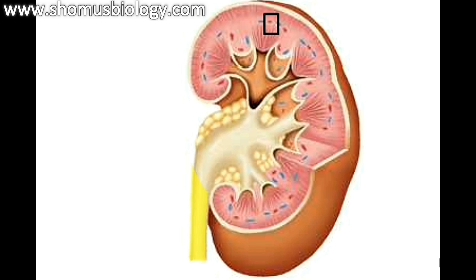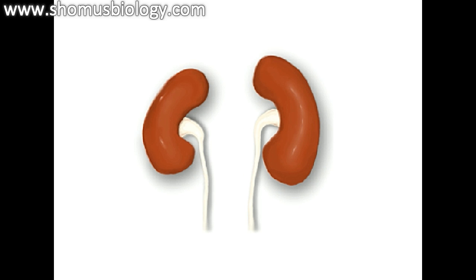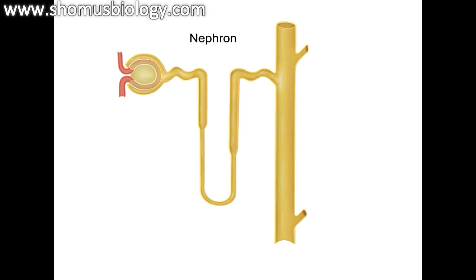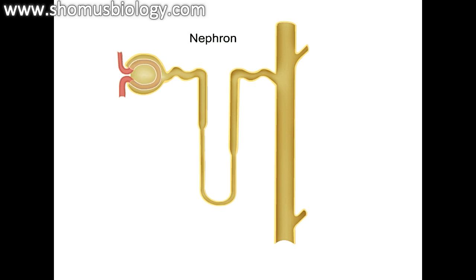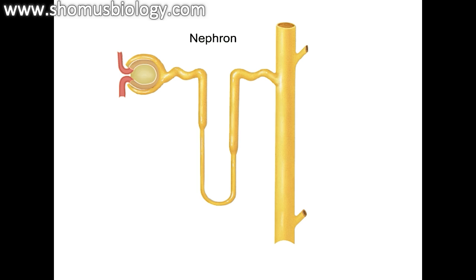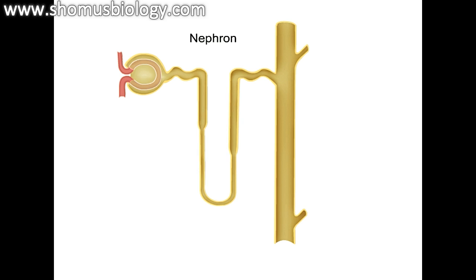Kidneys are bean-shaped organs that filter blood to regulate the levels of waste, water, and salt in the body fluids. The nephron is the functional unit of the kidneys. It modifies the composition of blood and gets rid of body wastes and toxins through urine production. Blood composition is altered by three primary mechanisms: filtration, tubular reabsorption, and tubular secretion.